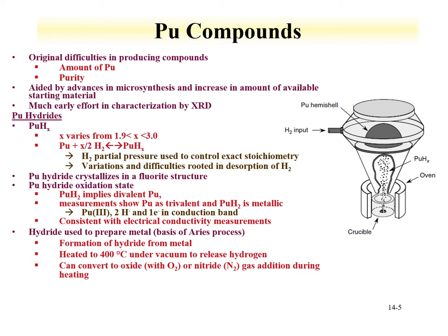Some properties of plutonium hydride are exploited in processing. In the ARIES process, plutonium metal is treated with hydrogen to form plutonium hydride, which flakes away from the metal into a crucible. That hydride is then heated to 400°C under vacuum, the hydrogen is released, and the metal is reformed. This is a way of converting a shape that may have classification issues into a metal form with appropriate geometry for criticality safety controls.